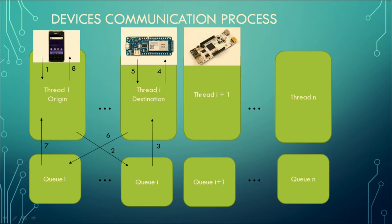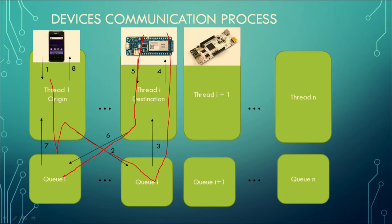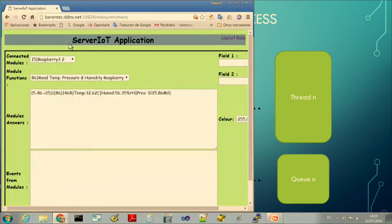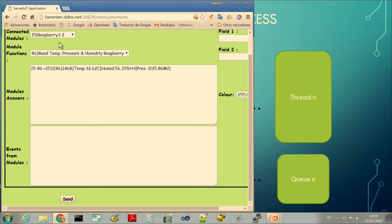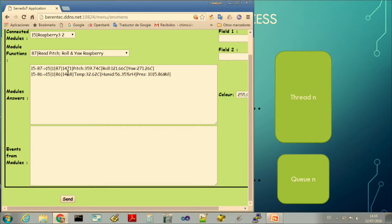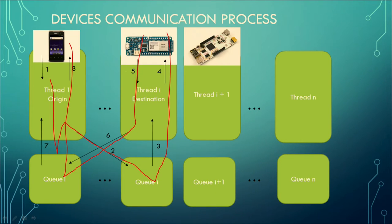Inside the server, what we have is an origin thread that sends to the queue of the destination. From that queue it goes to the device. The device executes the function and comes back with the result, which goes to the origin queue, and from there to the destination. For example, we could read the gyroscope of a device and it accumulates the results. The system is always the same — using queues and threads and sending the message.